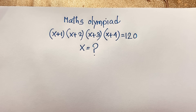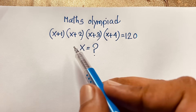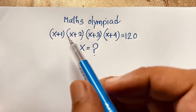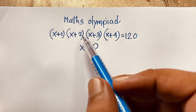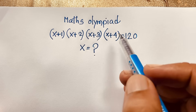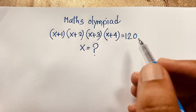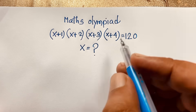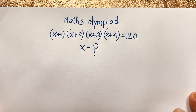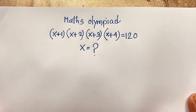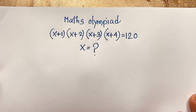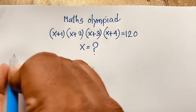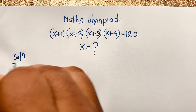Hello everyone, welcome to Russia's Classroom. Today we are solving an interesting math olympiad question: (x+1)(x+2)(x+3)(x+4) = 120. What is x? I will solve this question using an easy method.